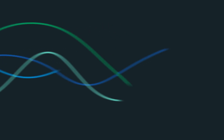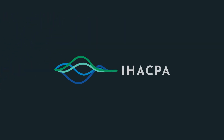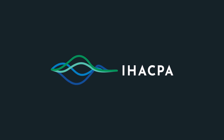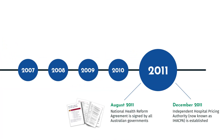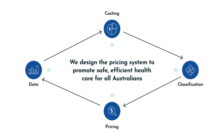The National Benchmarking Portal is a website-based application that provides public access to insights from data collected by the Independent Health and Aged Care Pricing Authority. iHACPA is an independent agency that works in partnership with all Australian governments to improve health outcomes for all Australians. As part of the health reforms that led to iHACPA's establishment in 2011, we are responsible for setting a national efficient price for delivering public hospital services across Australia.